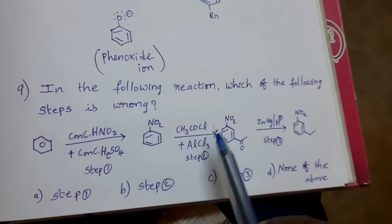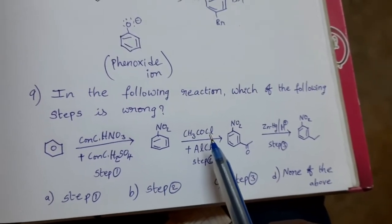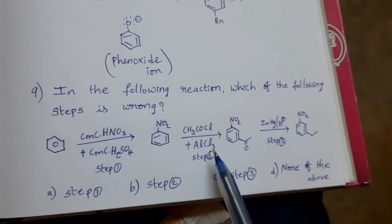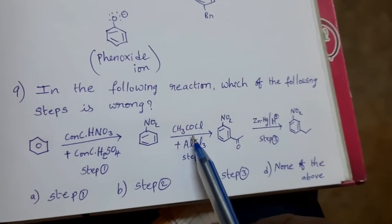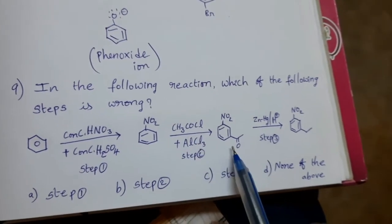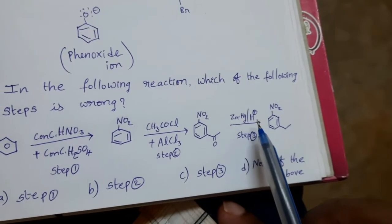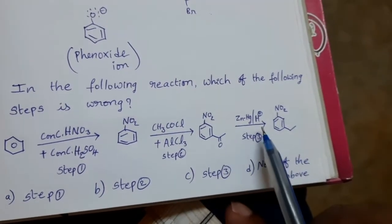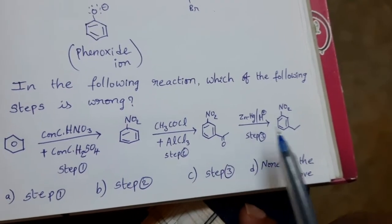This nitrobenzene is treated with CH3COCl (acetyl chloride) in the presence of AlCl3 as catalyst. Then we can get the electrophile CH3CO+ substitution. Now this compound is treated with zinc amalgam and HCl — Clemmensen reduction — where the carbonyl group is converted to CH2.